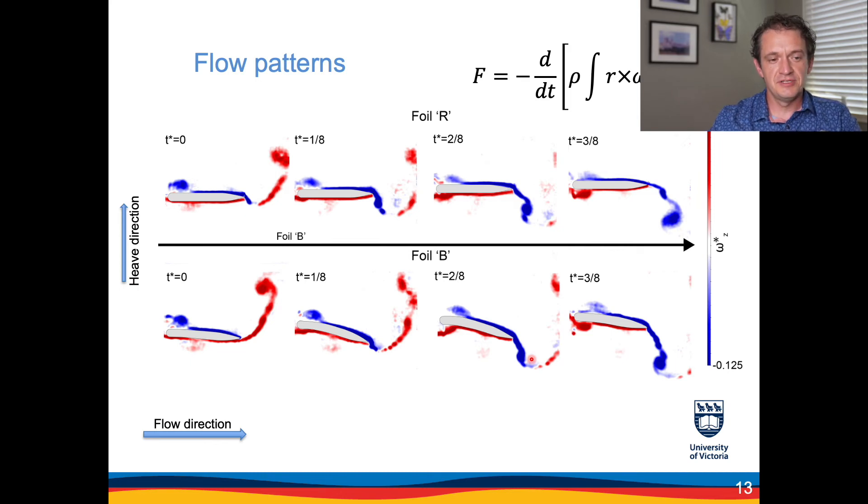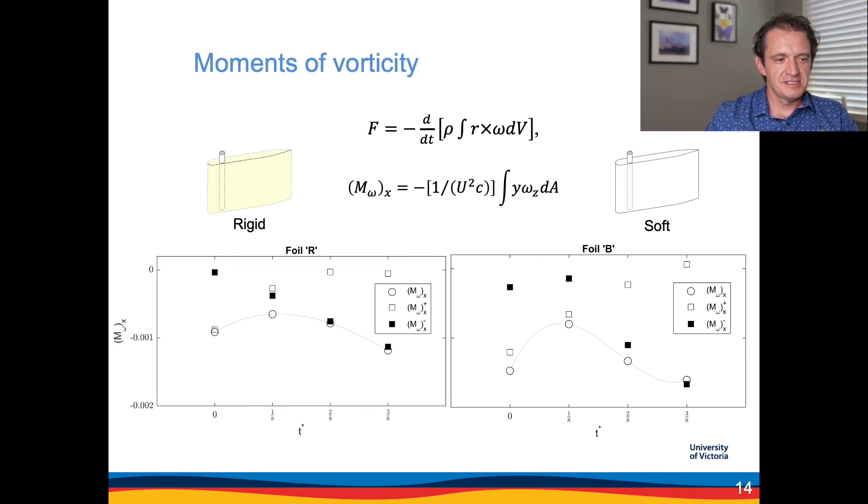We can relate the vorticity patterns or the flow structures to the measured forces, the flow induced forces on the plate, through the rates of change of the moments of vorticity. Here r is the moment arm from the center of mass of the foil to the location in the flow field, and omega is the vorticity value there. Let's consider for example for the case of the rigid foil on the left, the moments of vorticity that contribute to the x direction forces. They would be calculated like this where the moment arm is the y arm from the center of mass to the location where we observe the vorticity, and we integrate that quantity over the flow field.